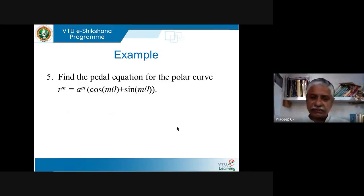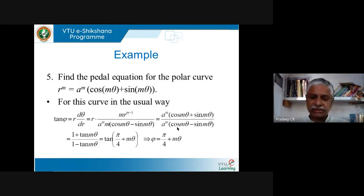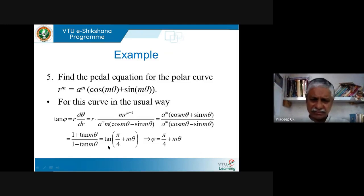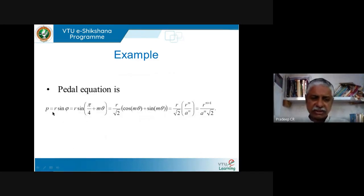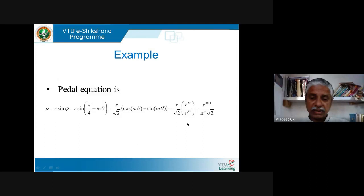Find the pedal equation for rᵐ = aᵐ(cosmθ + sinmθ). Differentiating and dividing numerator and denominator by cosmθ gives tanφ = (1 + tanmθ)/(1 − tanmθ) = tan(π/4 + mθ), so φ = π/4 + mθ. The pedal equation is p = r·sin(π/4 + mθ). Using sin(A+B) = sinA·cosB + cosA·sinB, and sin(π/4) = cos(π/4) = 1/√2, the result follows after elementary algebraic manipulation.